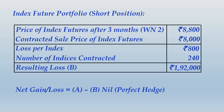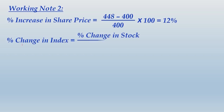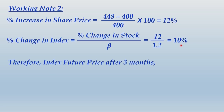Working Note 2 — how we get Rs. 8,800 as the expected Nifty futures price after 3 months. The share price rose from Rs. 400 to Rs. 448, a 12% increase. Applying the formula: percentage change in index = percentage change in stock / beta = 12% / 1.2 = 10%. Adding 10% to the initial Nifty futures price: Rs. 8,000 × 1.10 = Rs. 8,800.